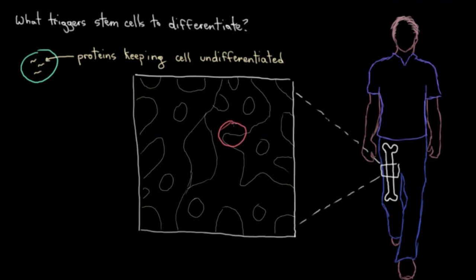So, for example, in the bone marrow, there's certain proteins that hang around stem cells and induce them to differentiate into the specific blood cell types.